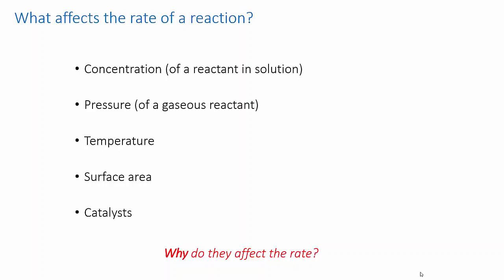In the last video we talked about the fact that the rate of reaction actually depends on the chances of a successful collision occurring between reactant molecules. Now we're going to figure out why it is that the variables of surface area, concentration and pressure, temperature and catalysts affect those chances and thereby affect the reaction rate.